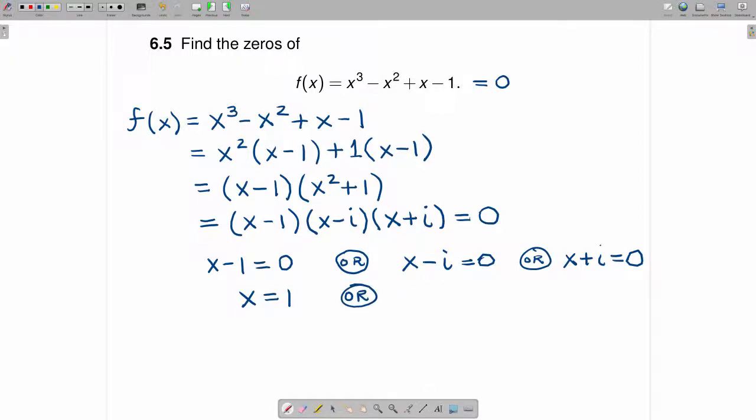To solve this second equation, we add i to both sides of the equation. So when you add i to the left-hand side, you get x. When you add i to the right-hand side, you get i.